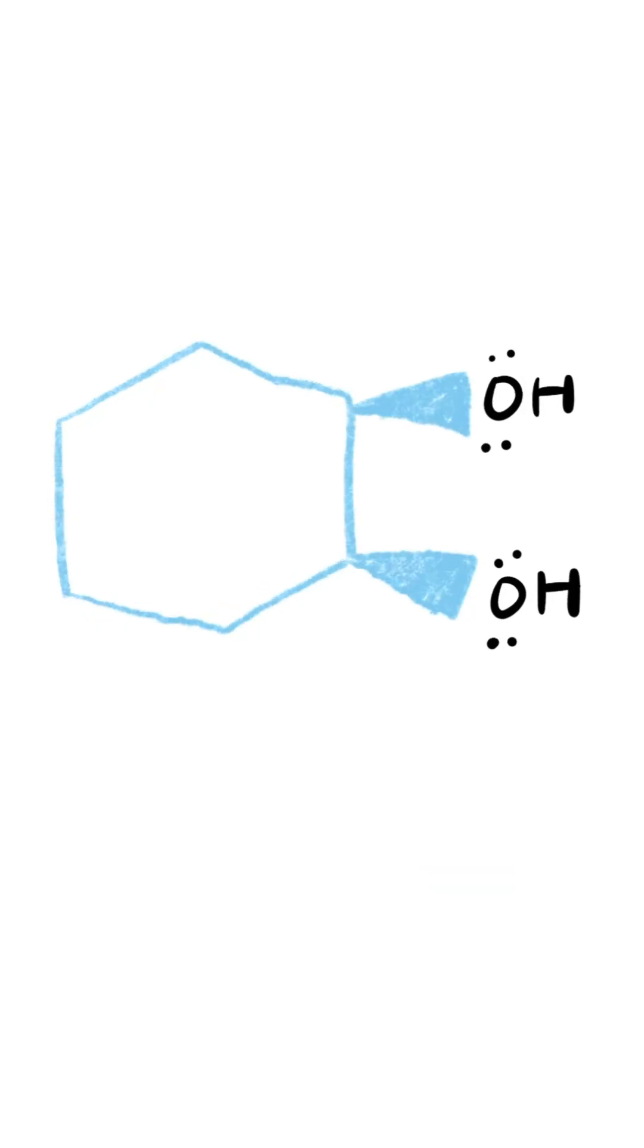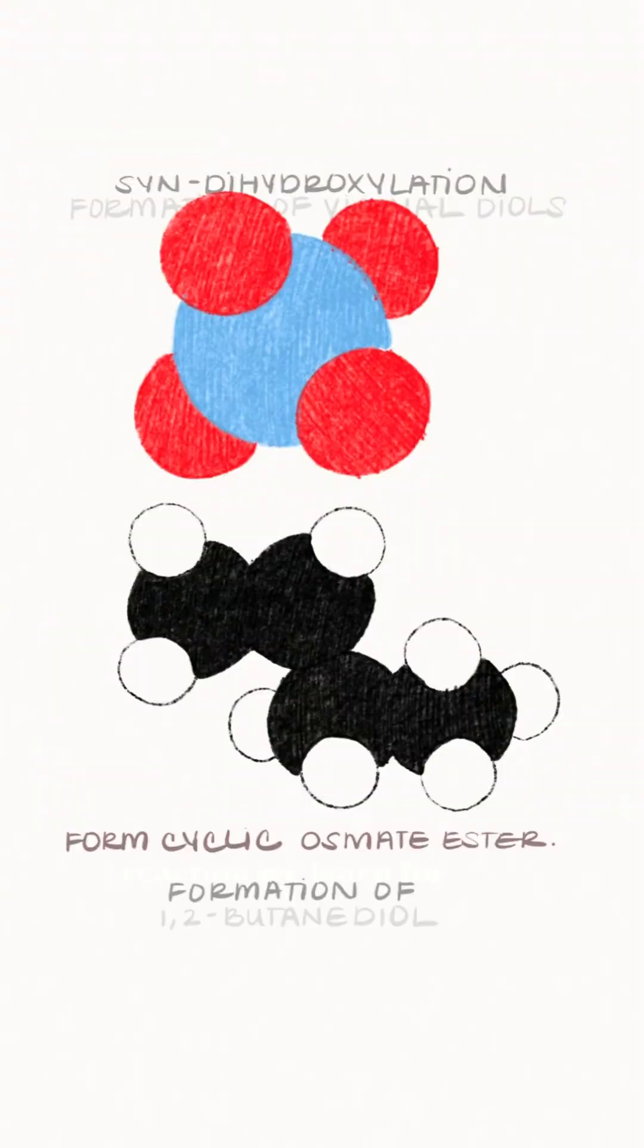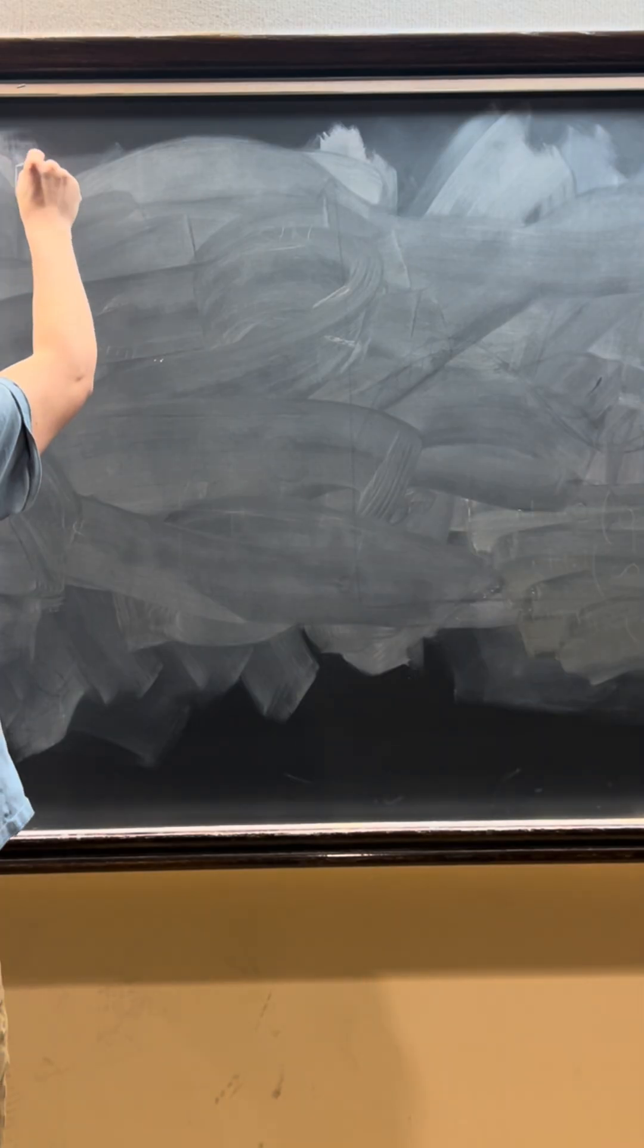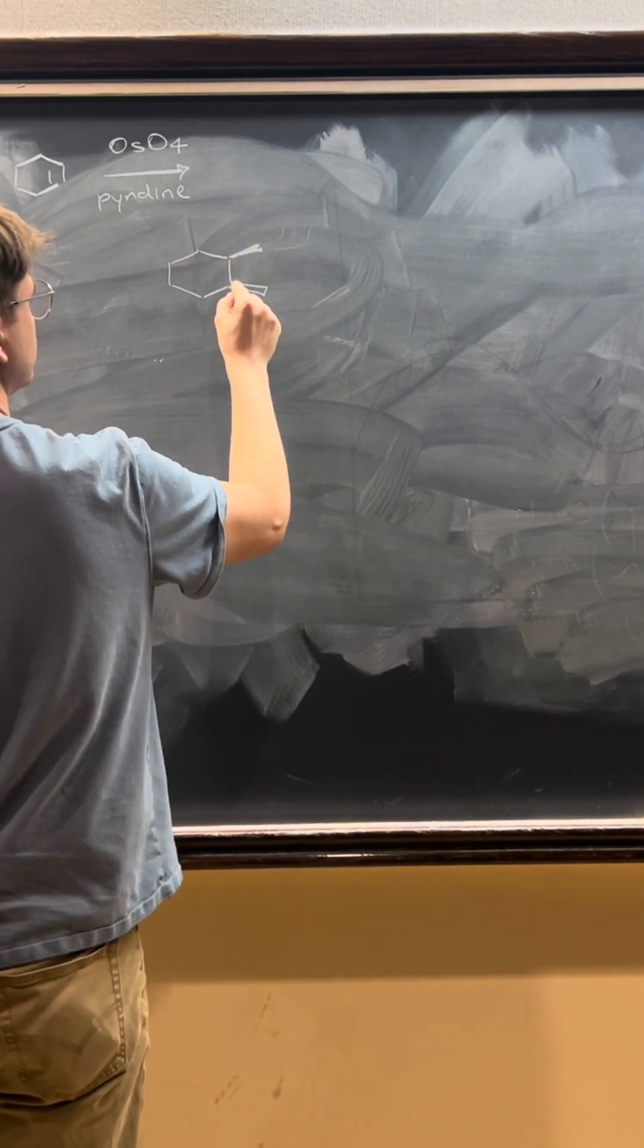But what if there was a case in which we wanted to control the reaction and put the hydroxyl groups on the same side spatially, or syn-addition? The standard reaction we learned for forming syn-1,2-diols is reacting the alkene with osmium tetroxide.